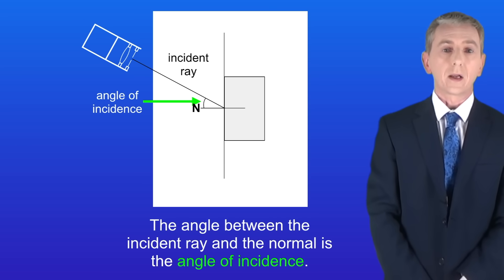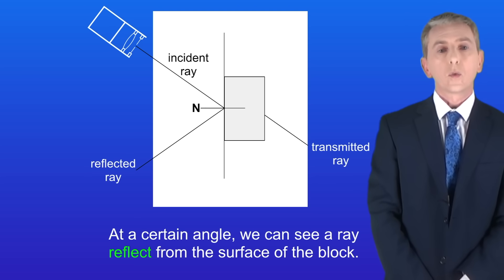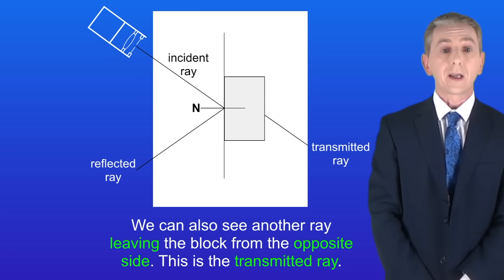The angle between the incident ray and the normal is the angle of incidence. Now we adjust the ray box to change the angle of incidence. At a certain angle we can see a ray reflect from the surface of the block. We can also see another ray leaving the block from the opposite side and this is the transmitted ray.